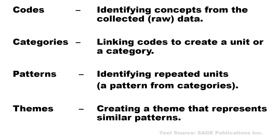Categorizing would be about linking those codes we made based on how we define the statements from the interviews. Patterns means identifying repeated units — it would be hard to categorize without patterns. And themes would be creating a theme that represents similar patterns. The themes could come from the different categories. You group the codes, you get categories, and then you can create themes out of those categories.